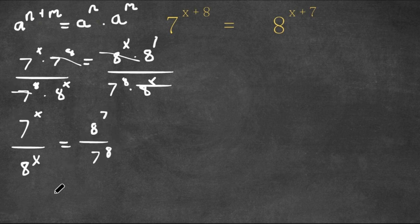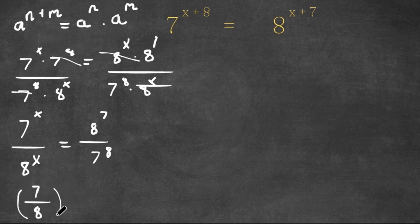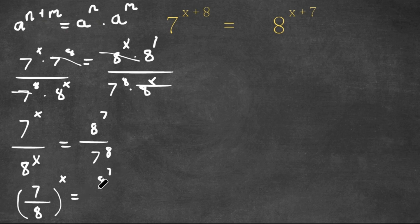Now, 7 to the power of x over 8 to the power of x is the same thing as 7 over 8 to the power of x, and now this is equal to 8 to the power of 7 over 7 to the power of 8.